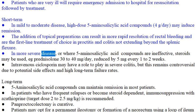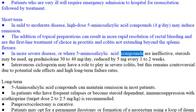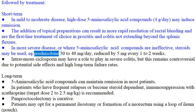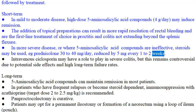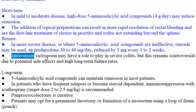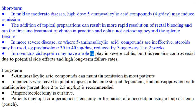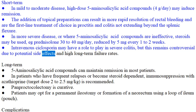In more severe disease, or where 5-aminosalicylic acid compounds are ineffective, steroids may be used, e.g. prednisolone 30–40 mg/day, reduced by 5 mg every 1–2 weeks. Intravenous cyclosporine may have a role to play in severe colitis, but this remains controversial due to potential side effects and high long-term failure rates.